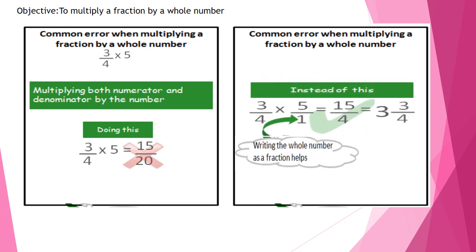Instead of this, you have to write the 5 as a fraction. You make it 5 over 1. And then you follow exactly the same steps that we did in the previous example. You make 3 times 5, 15, 4 times 1, 4.